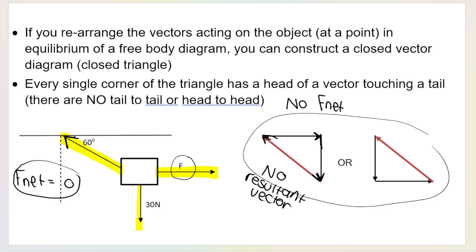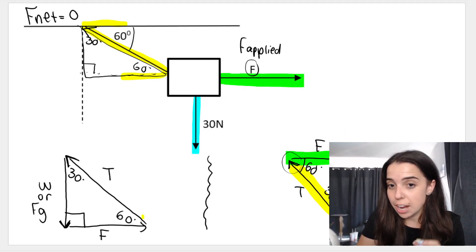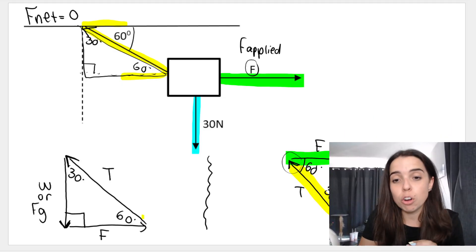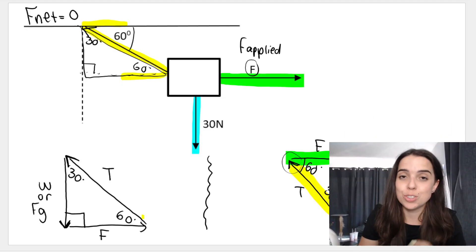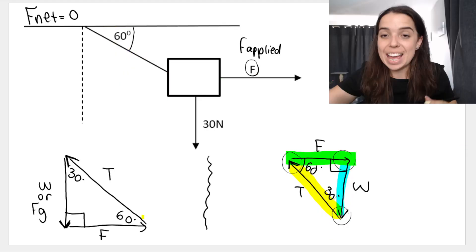How do you know which way the arrows must point? How do you know the angles? How do you know where to put them? That's what I'm going to be doing in this video, because if you do not know how to construct the triangle, you're not going to know how to do the calculation. So let's do this.